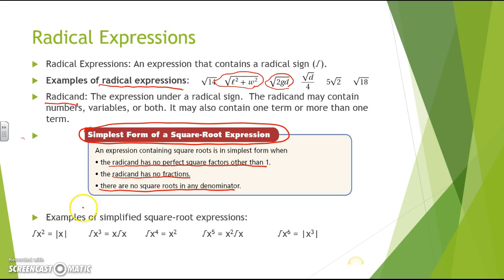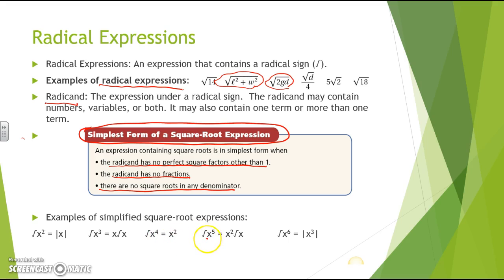Here we have examples of simplified square root expressions. The square root of x squared becomes the absolute value of x — remember it has to be absolute value because it's always positive. The square root of x to the third is x times the square root of x. The square root of x to the fourth becomes x squared. The square root of x to the fifth is x squared times the square root of x. And the square root of x to the sixth becomes the absolute value of x to the third power.